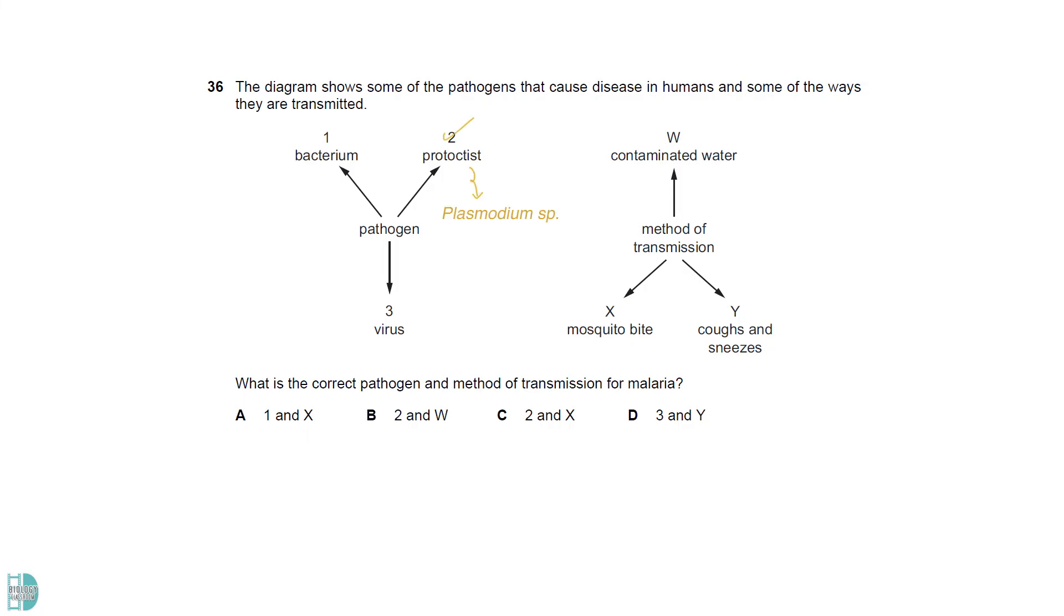Malaria is caused by plasmodium, which is a type of protoctist. Its transmission requires female Anopheles as the vector.